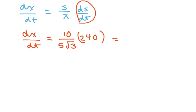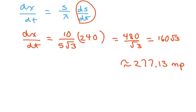And this is going to equal 480 over square root of 3, which equals 160 square root of 3, which is approximately 277.13 miles per hour. And that's all. Thank you. Have a nice day.